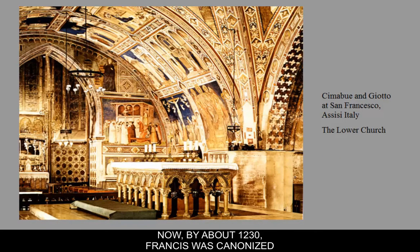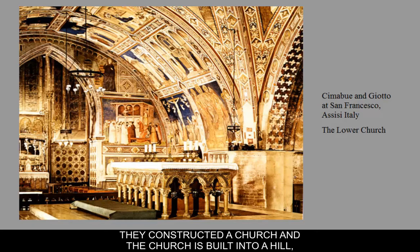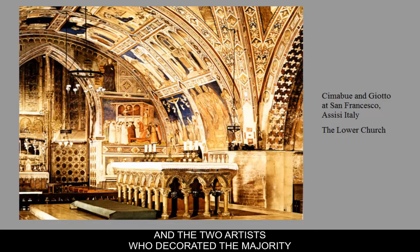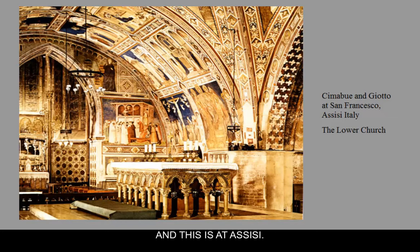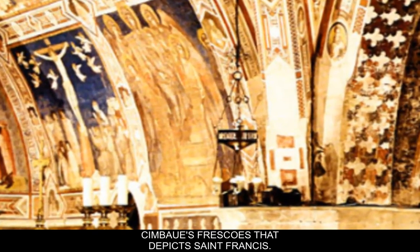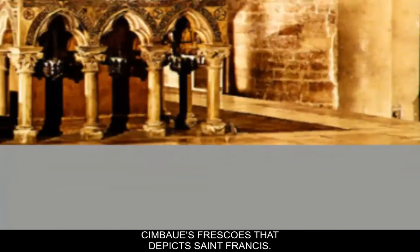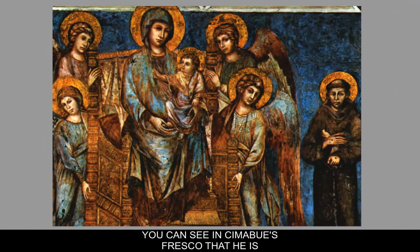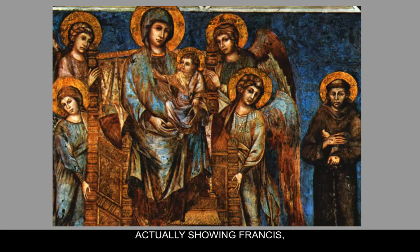By about 1230 Francis was canonized — made a saint — and shortly thereafter in Assisi they constructed a church built into a hill with an upper and lower part, dedicated to St. Francis. The two artists who decorated the majority of the church are Cimabue and his student Giotto. We're going to look at some of the frescoes, starting with one of Cimabue's frescoes depicting St. Francis.